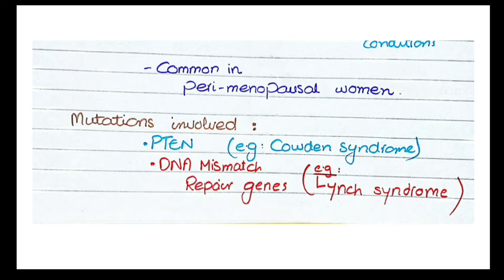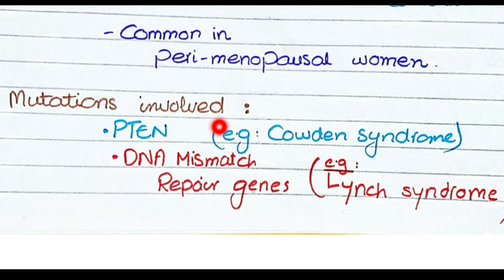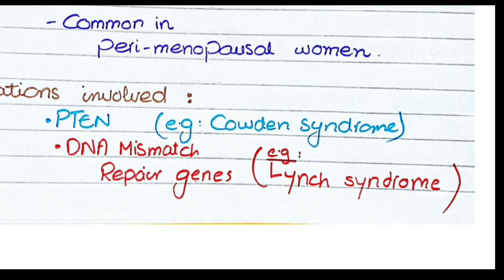The mutations involved in endometrioid carcinoma are either PTEN or DNA mismatch repair genes. These mutations can occur sporadically, but sometimes women are born with one defective allele of these genes. If one allele of PTEN is mutated, we call it Cowden syndrome; mutations in alleles of DNA mismatch repair genes result in Lynch syndrome. Both syndromes specifically increase the risk of endometrioid carcinoma.